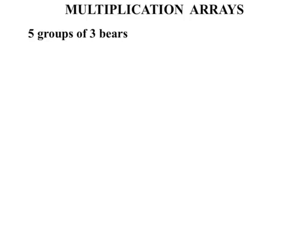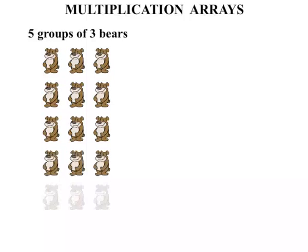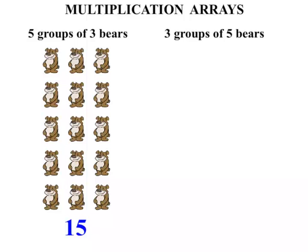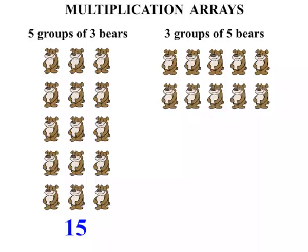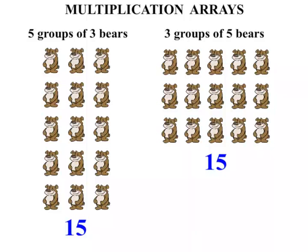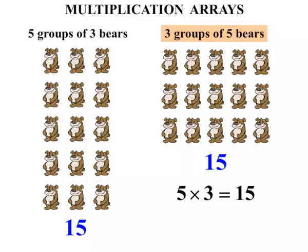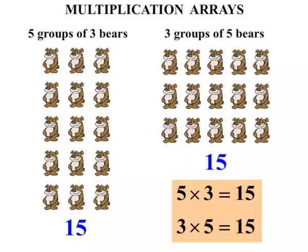Now let's consider what we've seen. Five groups of three bears — we had fifteen. Then we looked at three groups of five bears — we also got fifteen. Five groups of three bears is five times three, or five lots of three, and it equals fifteen. Three groups of five bears we can write as three times five, which means three lots of five — again, that equals fifteen as well. So five times three equals fifteen, and three times five equals fifteen. It doesn't seem to matter what order we multiply in — and it doesn't. It doesn't matter what order we multiply two numbers in; we'll get the same answer. Very important to remember that.